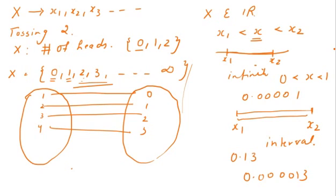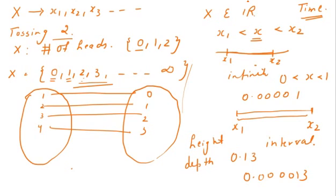For the discrete case, consider tossing two coins and defining X as the number of heads — that is discrete. For continuous examples: time is always a continuous quantity; measuring heights and weights are also cases of continuous random variables. Similarly, depth is a continuous random variable. For discrete, values are assumed at distinct points like 0, 1, 2, up to infinity.